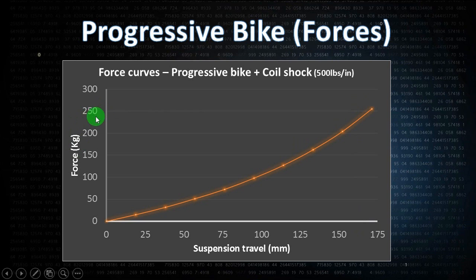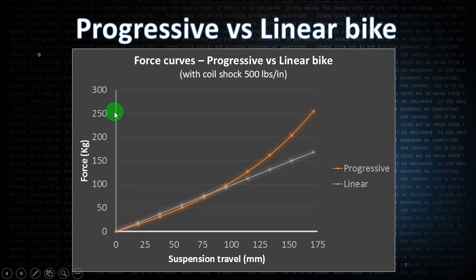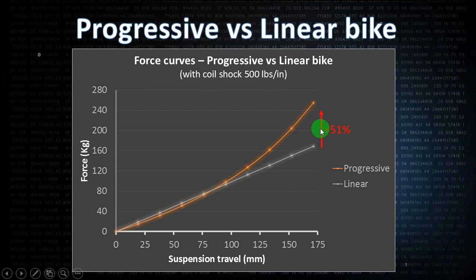In this graph we can see that to bottom out the progressive bike you will need 250 kilograms of force at the rear wheel. Comparing the linear and progressive graphs — both bikes with the same spring rate — we can see that in the progressive bike you need 50 percent more force to bottom out compared to the linear bike.